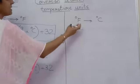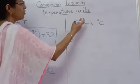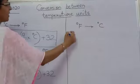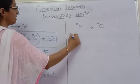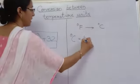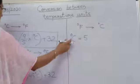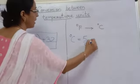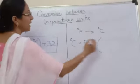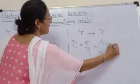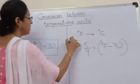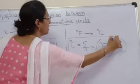Now let us see how to change degree Fahrenheit to degree Celsius. For this, you have to use the formula: degree Celsius is equal to 5 by 9, multiplied by degree Fahrenheit minus 32. Note down this formula.